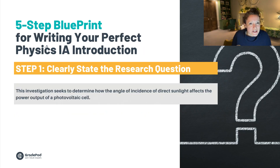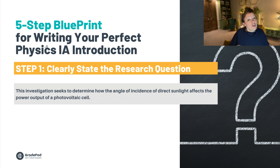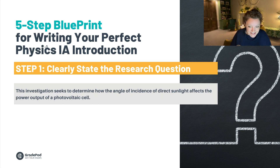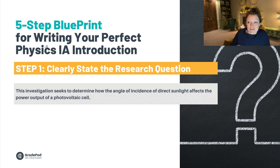The five-step blueprint for writing your perfect physics IA introduction. Step one is to clearly state the research question. Your research question will be: how does variable X affect variable Y? For my example: how does the angle of incidence of direct sunlight affect the power output of a photovoltaic cell? So step one of writing the introduction is: 'This investigation seeks to determine how the angle of incidence of direct sunlight affects the power output of a photovoltaic cell.' Simple enough.